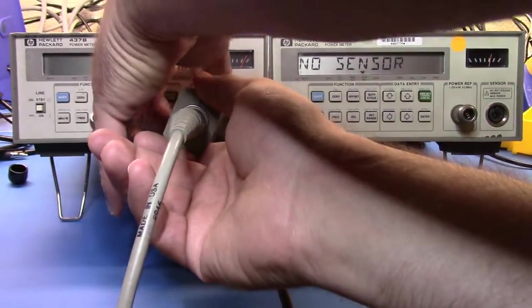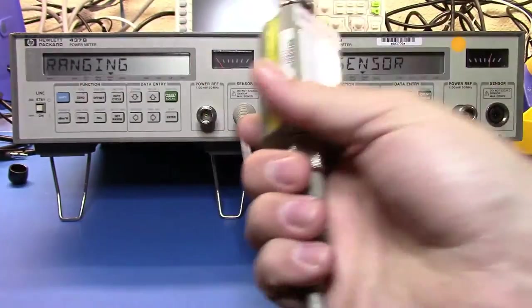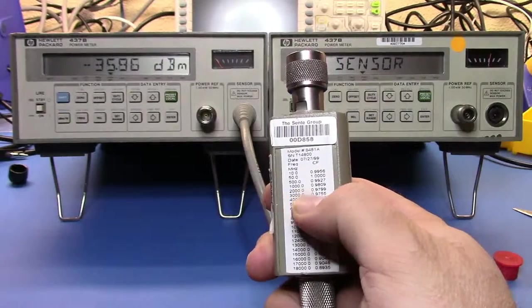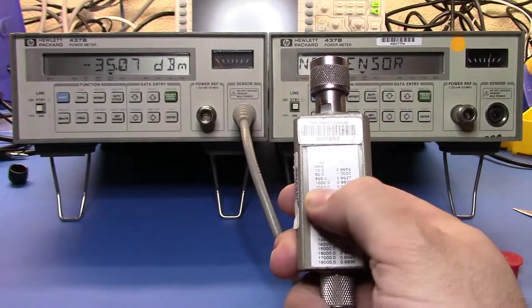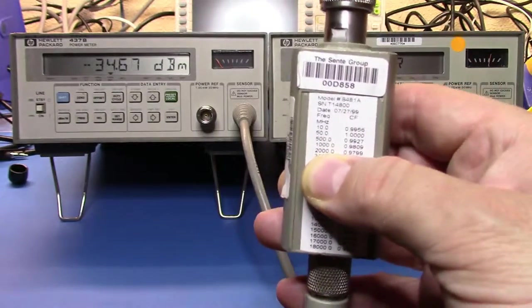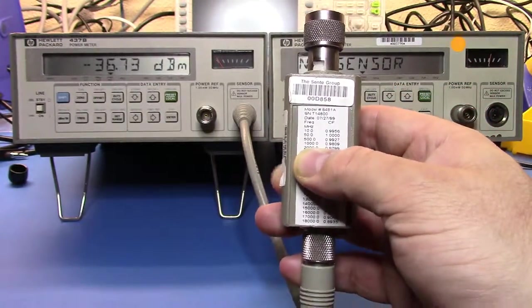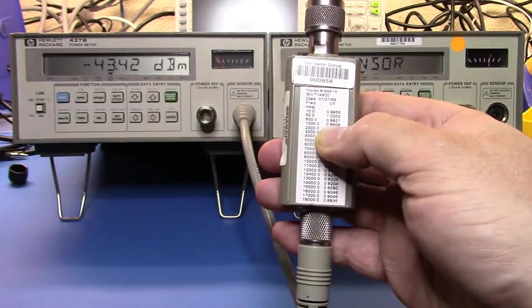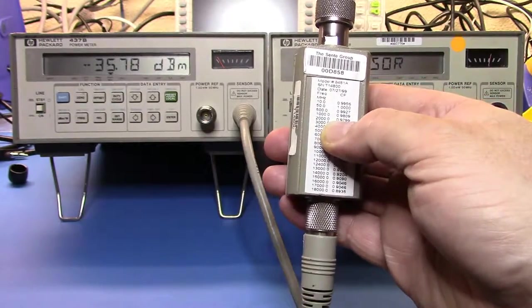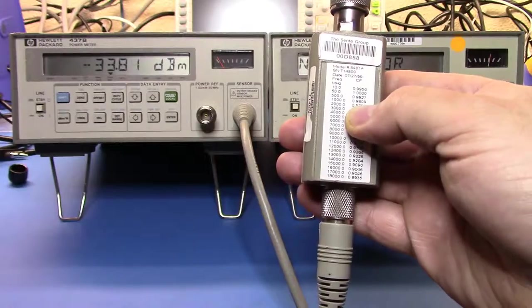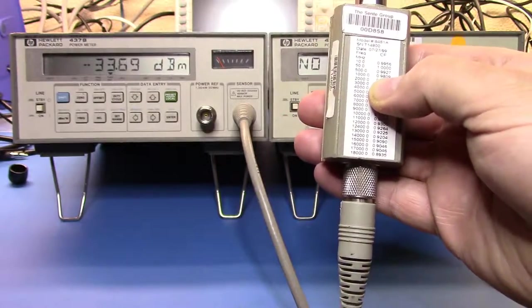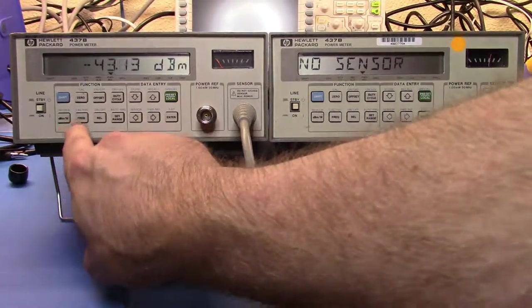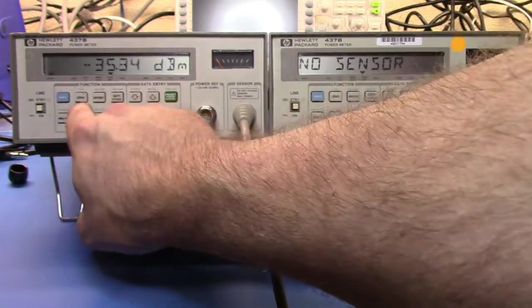But if we turn that power reference on, we should see it come up and say yep, it's zero dB. So let's take that off here. And typically these sensors will have values actually written on them and you can see here that at one gigahertz the calibration factor is 0.9809, and for two gigahertz it's 0.9799. So we're going to be about 0.9804 at 1500 megahertz.